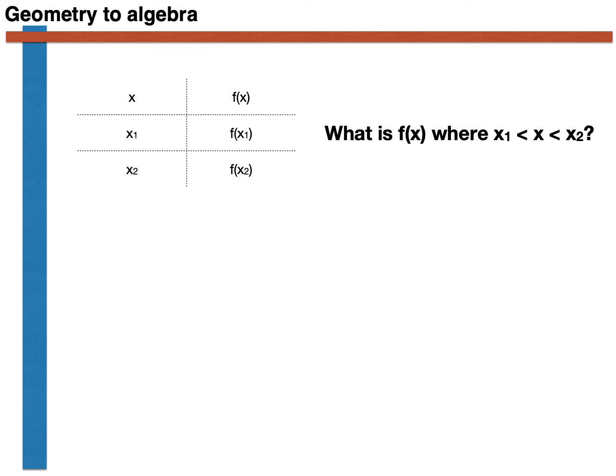Notice that when we interpolate, we are always determining the value of the function at some position between the two points. If x is greater than both x1 and x2, or if x is less than both x1 and x2, then we are extrapolating the function and not interpolating.